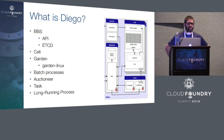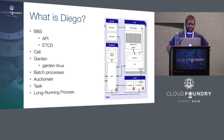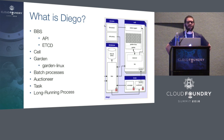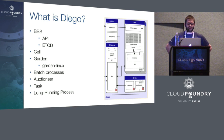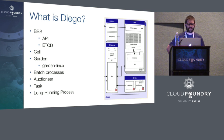As we go through this talk, we're going to touch on a few components of Diego that you can see in this picture. Some of the ones we're going to talk about are the BBS, which is the central Diego API — everything that happens in the Diego cluster has to go through that API, and it's where the truth is saved. That storage is backed by a key-value store called etcd, a distributed key-value store that provides reliable access to that data.